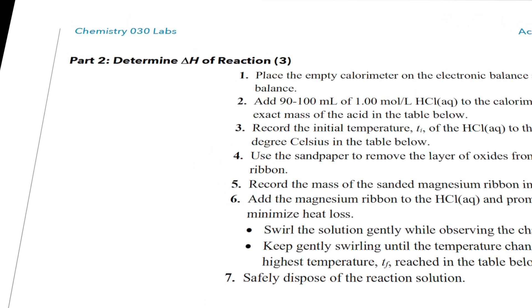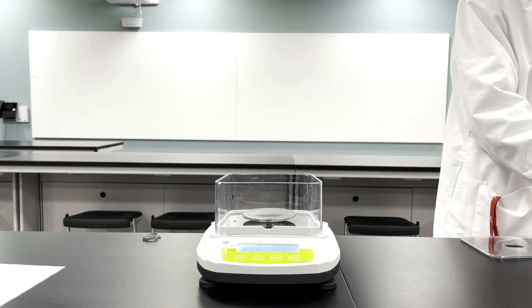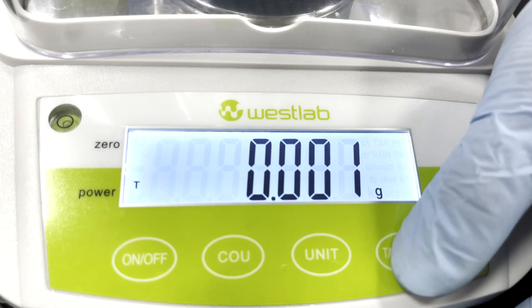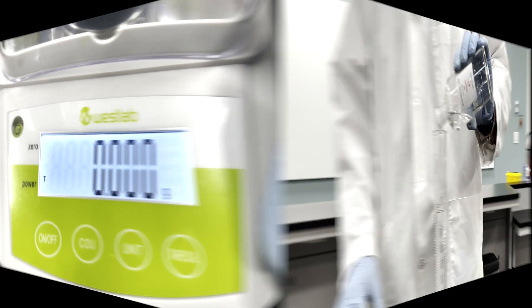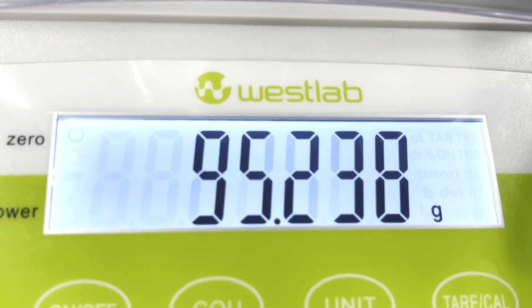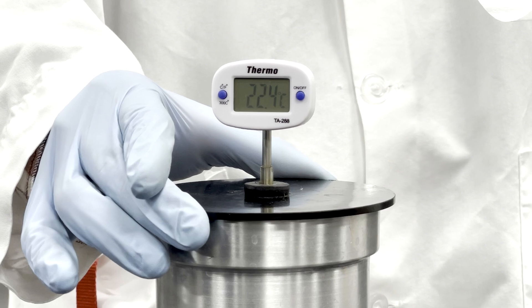In Part 2 of this lab, we shall determine the enthalpy change for reaction 3. The first few steps are as before: the empty calorimeter is placed on the electronic balance and we zero the balance. 90 to 100 milliliters of acid is added to the calorimeter, and the mass is recorded in the data table along with the initial temperature.